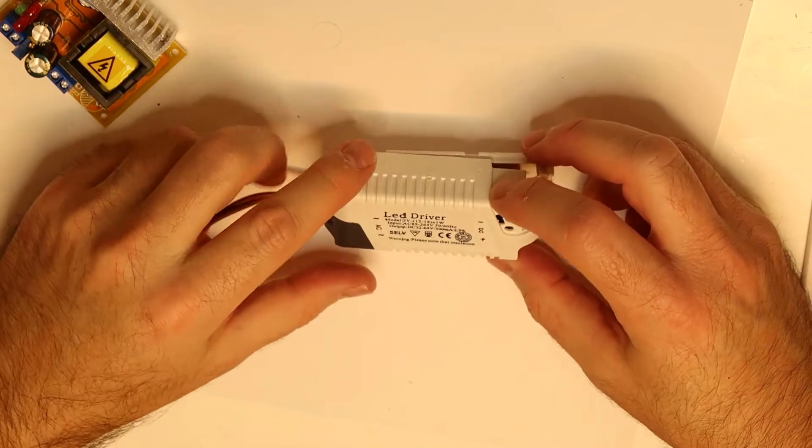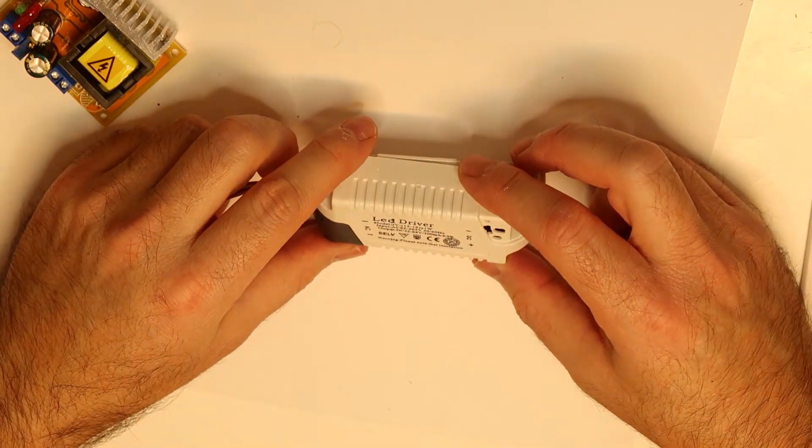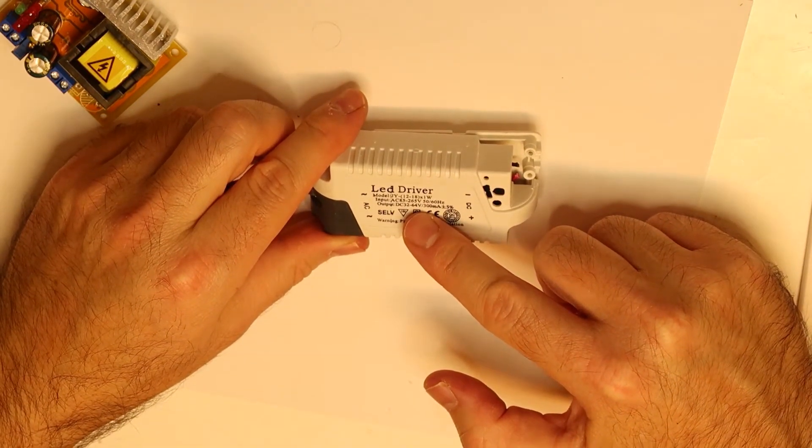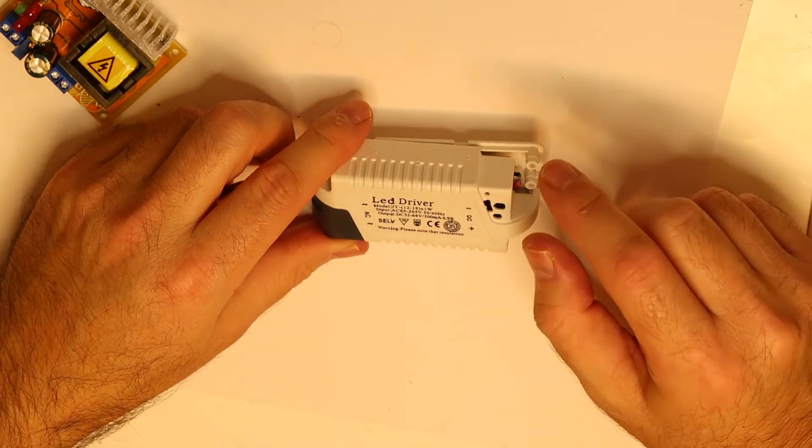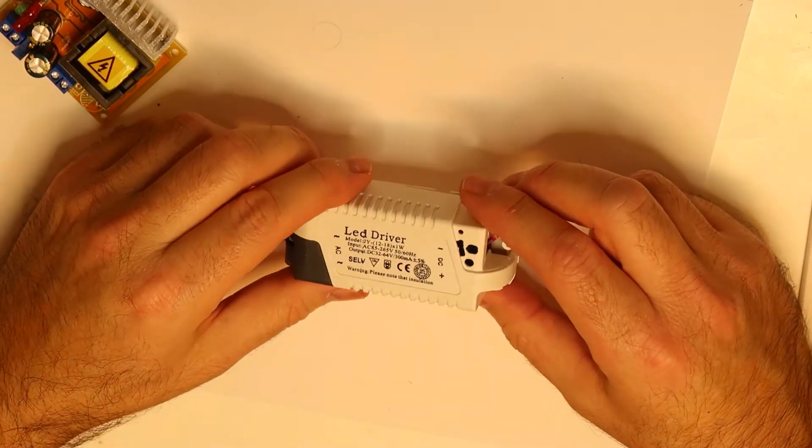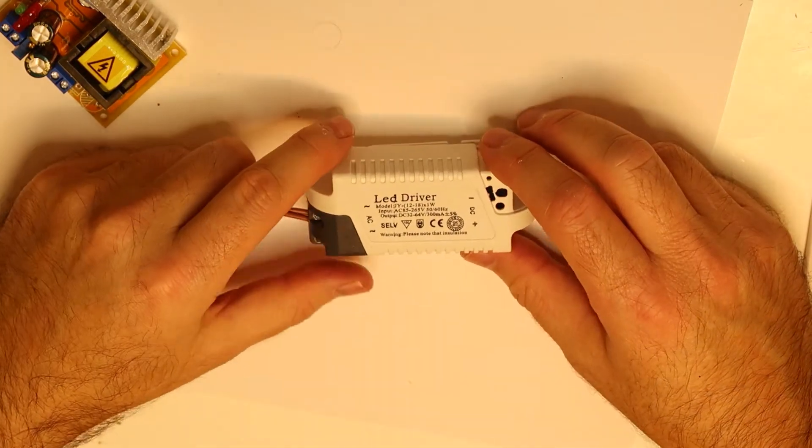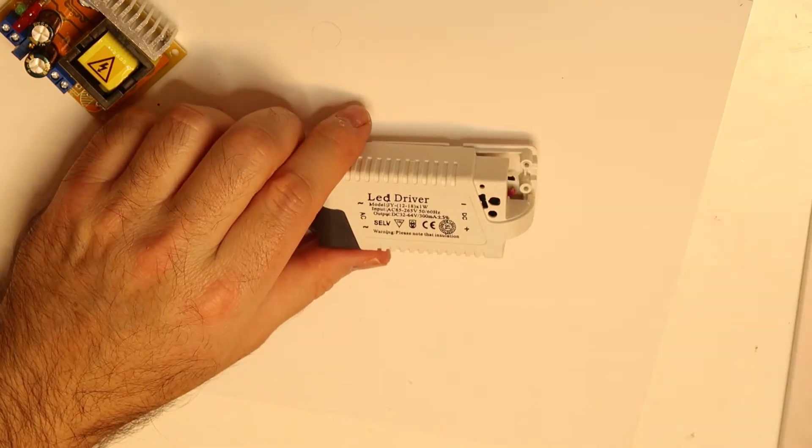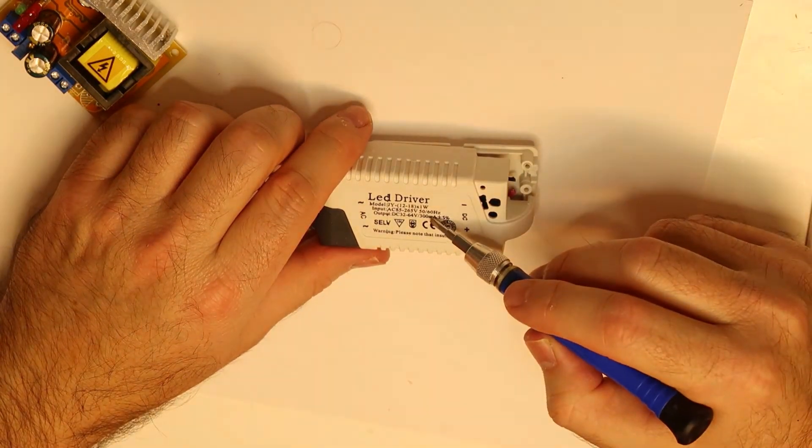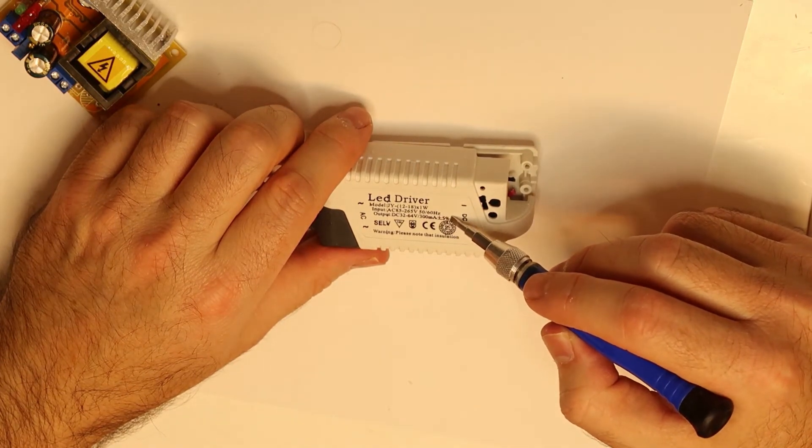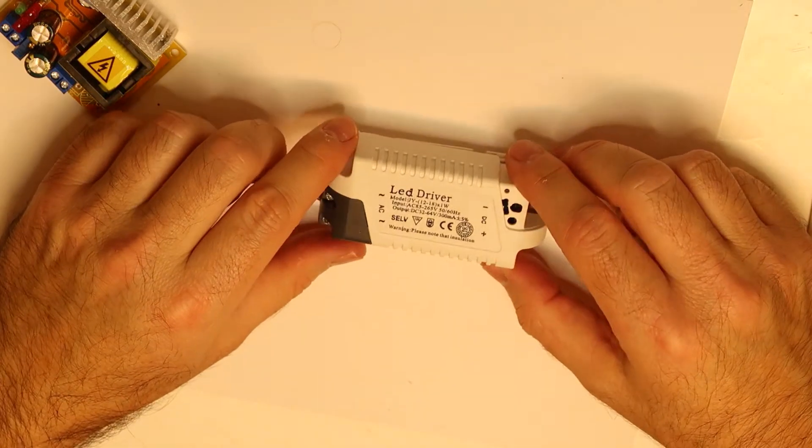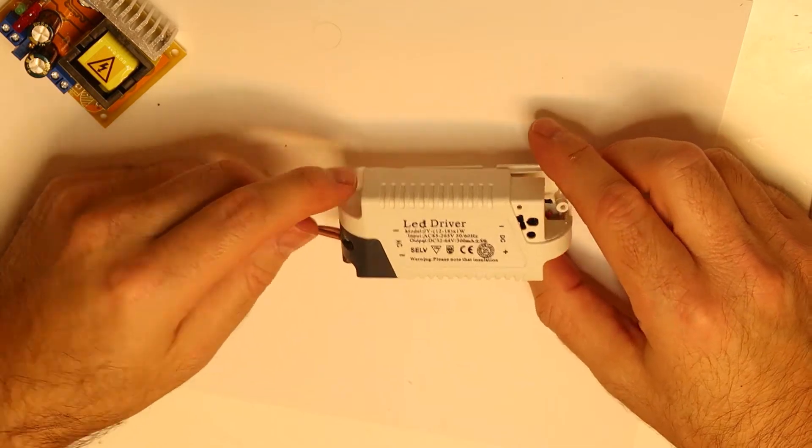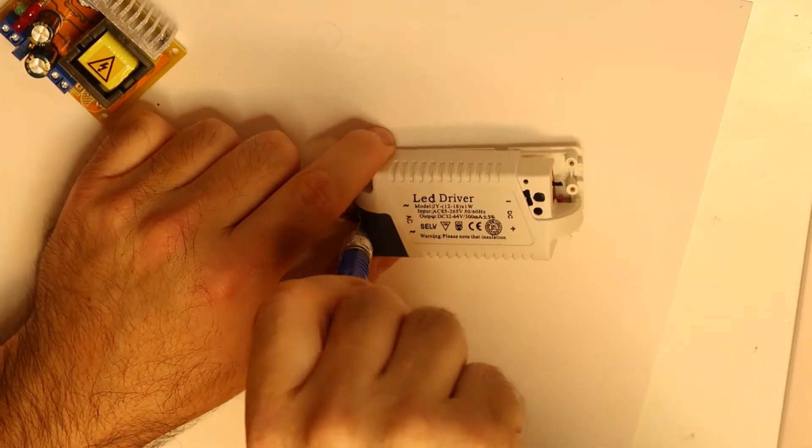This power converter, if you look at it, they say that the voltage out is between 32 to 64. This is a huge range, this is twice the voltage. So how can it be? Because when you're working with LEDs, what matters is not the voltage. What is important is the current. So they claim that for this LED the current is 300 milliamps plus minus 5%. So this is a current source, this is not a voltage source.